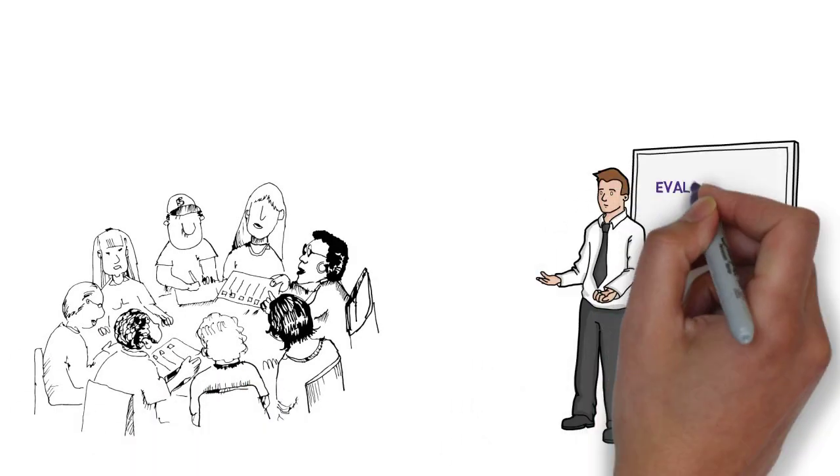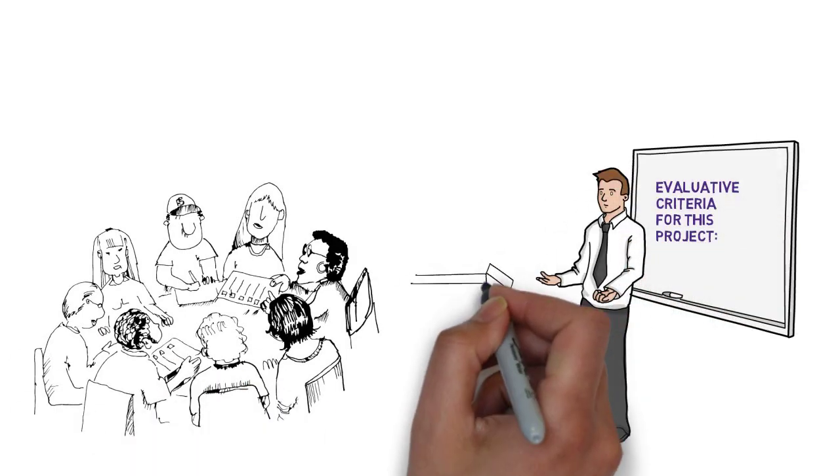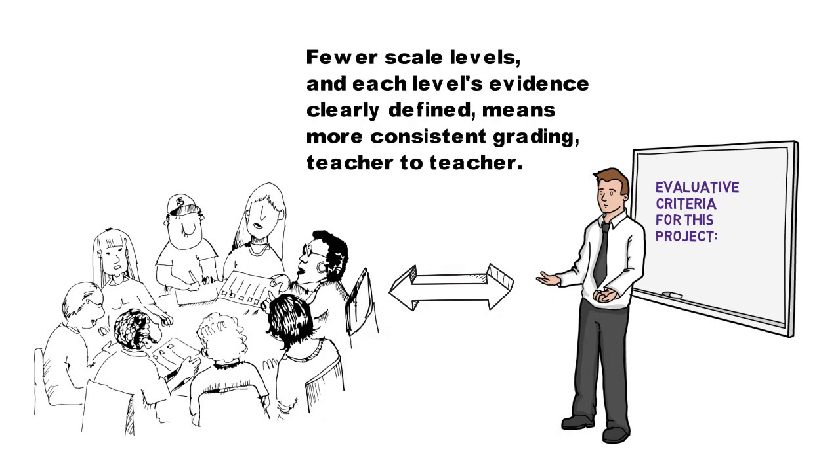Most schools who value consistency in grading, but also honest, clear communication, they migrate away from the 100-point scale and towards smaller, rubric-sized scales that can facilitate specific evidence descriptors that provide more helpful feedback.